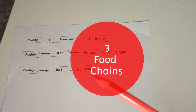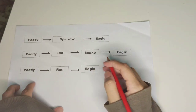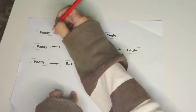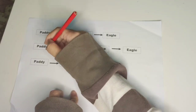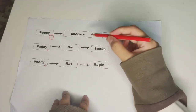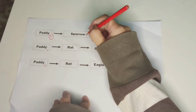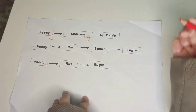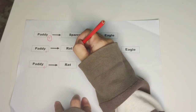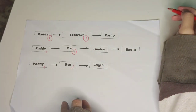Now, let us start using three food chains to make a food web. First, we need to identify which one should be first. In this food chain, paddy will be number one. Next, we're going to put number two. In these food chains, sparrow and rat are given number two, because these animals are at the number two position.